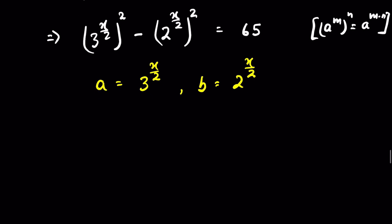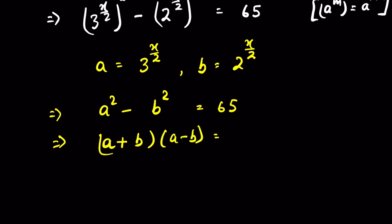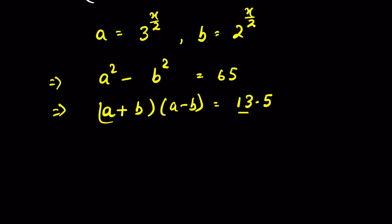This expression is in the form of a² minus b², which is an algebraic identity we can express as (a + b)(a − b). And 65 we can write as 13 times 5. Now we have two factors: (a + b) and (a − b), and here also two factors: 13 and 5.